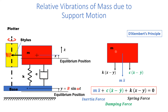Let us draw the free body diagram of the mass. It is subjected to a spring force. If both displacements are upward and X is slightly more than Y, then the spring will be stretched by a distance X minus Y. So the spring force will be K times its deflection, which is K(X − Y). Since X is taken as positive upward, the spring force acts downwards with value K(X − Y).